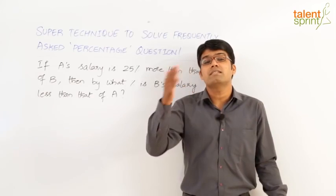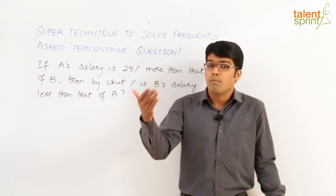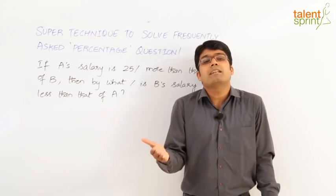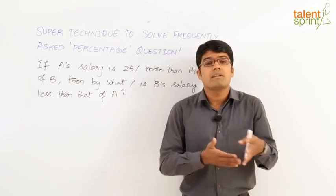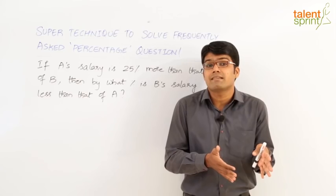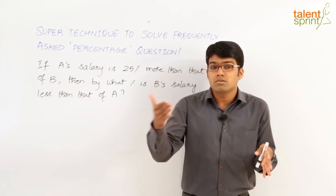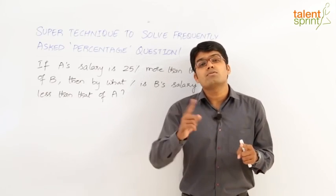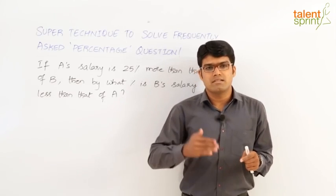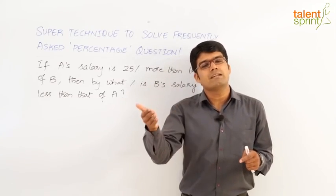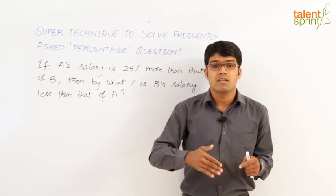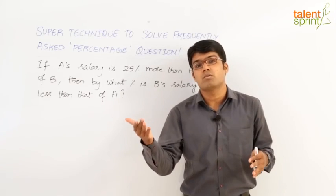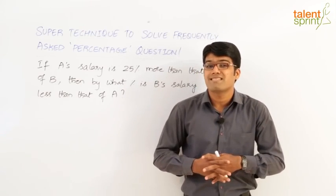So the point is: 30,000 to 60,000 was a 100% increment. But 60,000 to 30,000 is not a 100% decrement. A 100% decrement would imply it becomes 0, but it has become 30,000. So 60,000 to 30,000 is only a 50% decrement. Understand — the absolute values are the same in both directions: 30,000 more going up, 30,000 less going down. But percentage-wise, it is not the same: 30 to 60 is 100% more, but 60 to 30 is only 50% less.